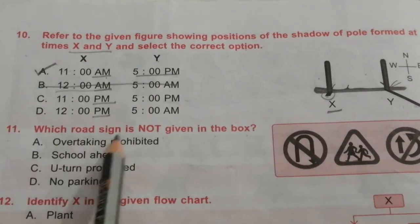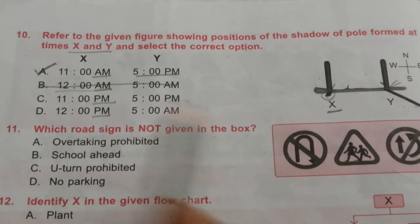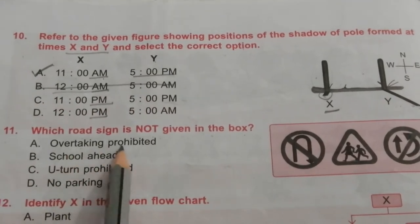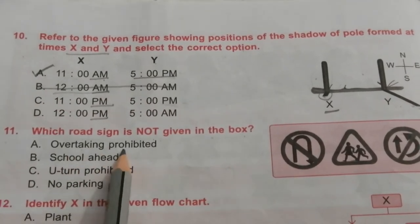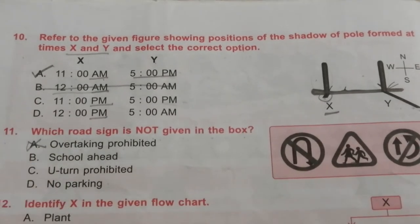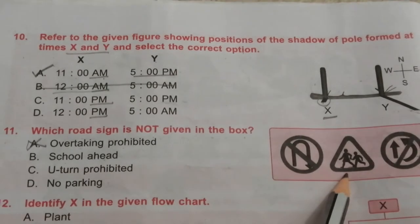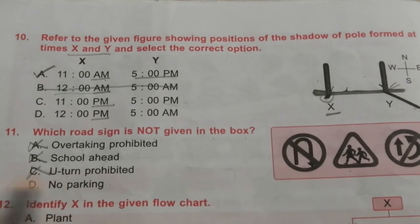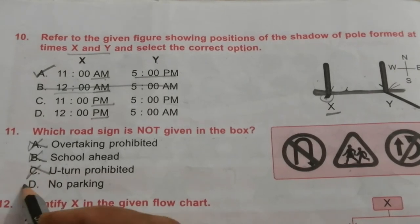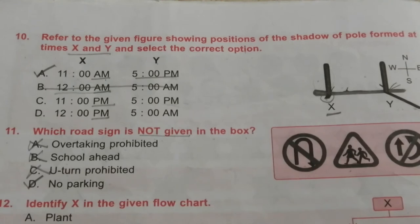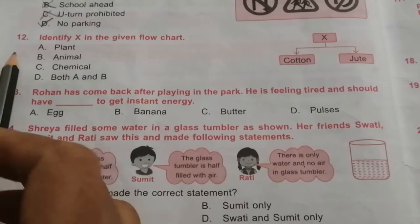Question 11: Which road sign is not given in the box? The signs shown are: overtaking prohibited, school ahead, and U-turn prohibited. The sign that is not given is no parking. The answer is no parking.